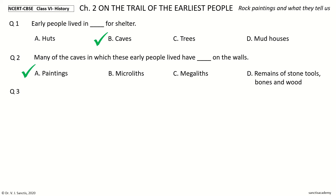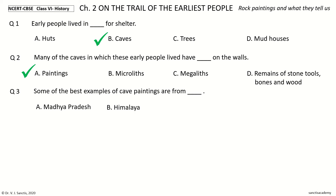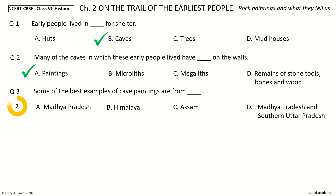Question 3. Some of the best examples of cave paintings are from ___. The options are: Madhya Pradesh, Himalaya, Assam, Madhya Pradesh and Southern Uttar Pradesh. Your time to choose. And the answer is Madhya Pradesh and Southern Uttar Pradesh.